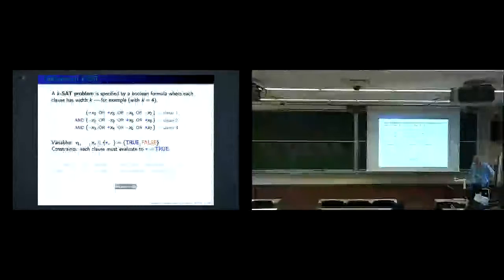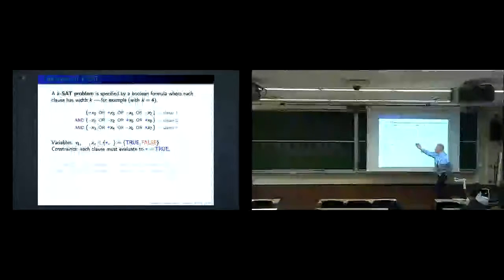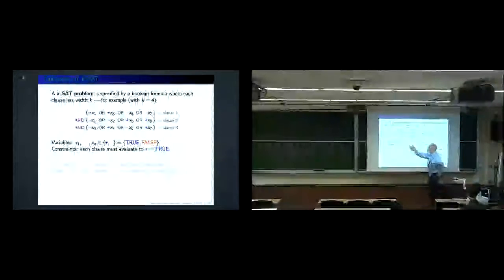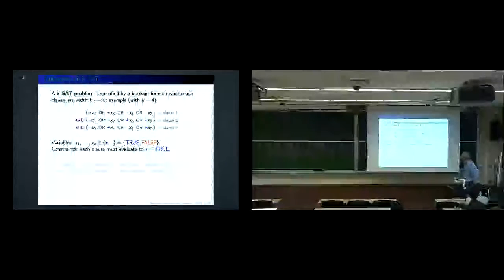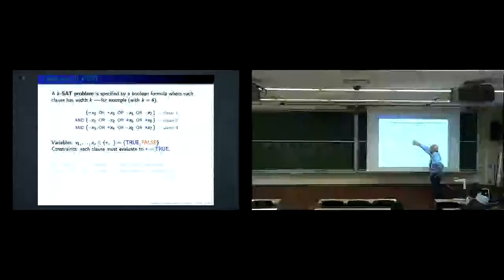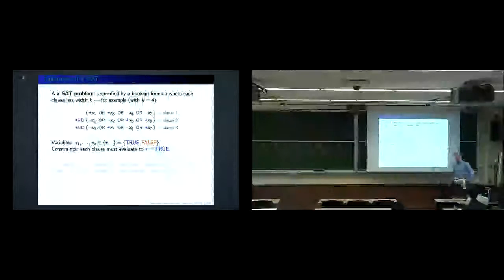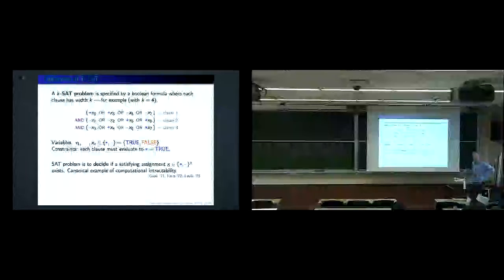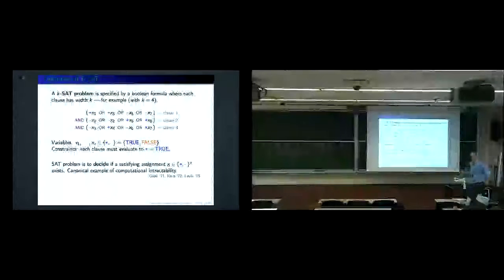The SAT problem is to decide if a satisfying assignment in {+1,-1}^n exists. This is a canonical example of NP-complete, due to Cook. The worst case complexity is presumed to be very difficult. You can just make X6 equal to one to take care of one clause, make X4 equal to one for another — with few constraints it's easy to find a solution just by looking, but not on a large graph.